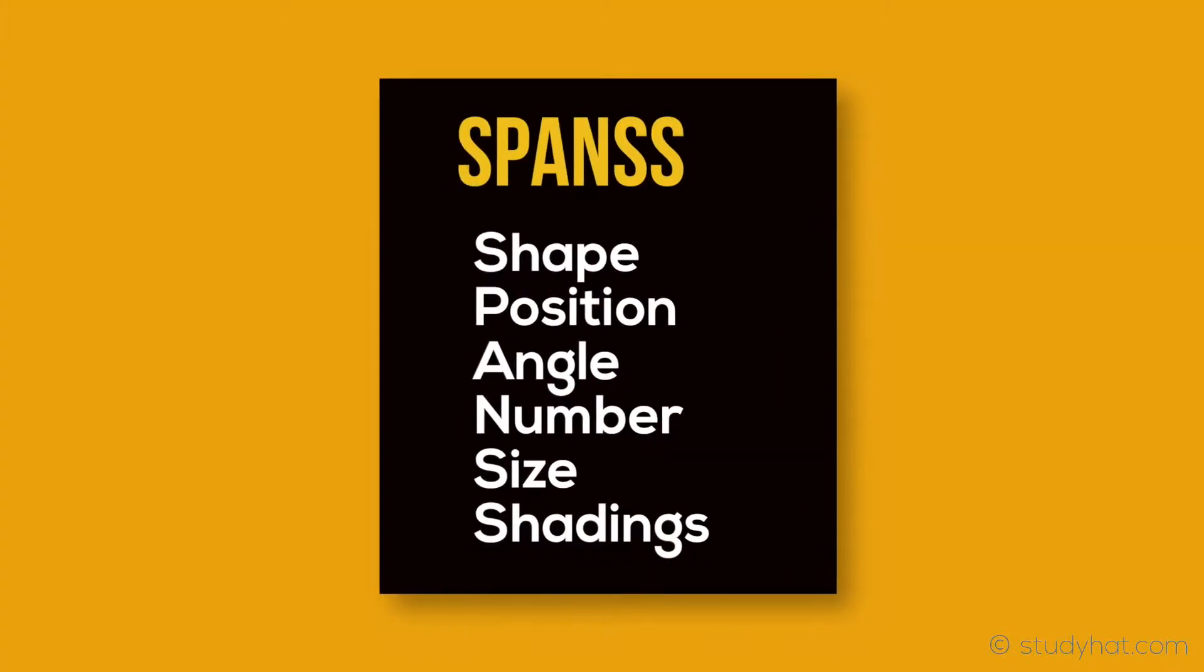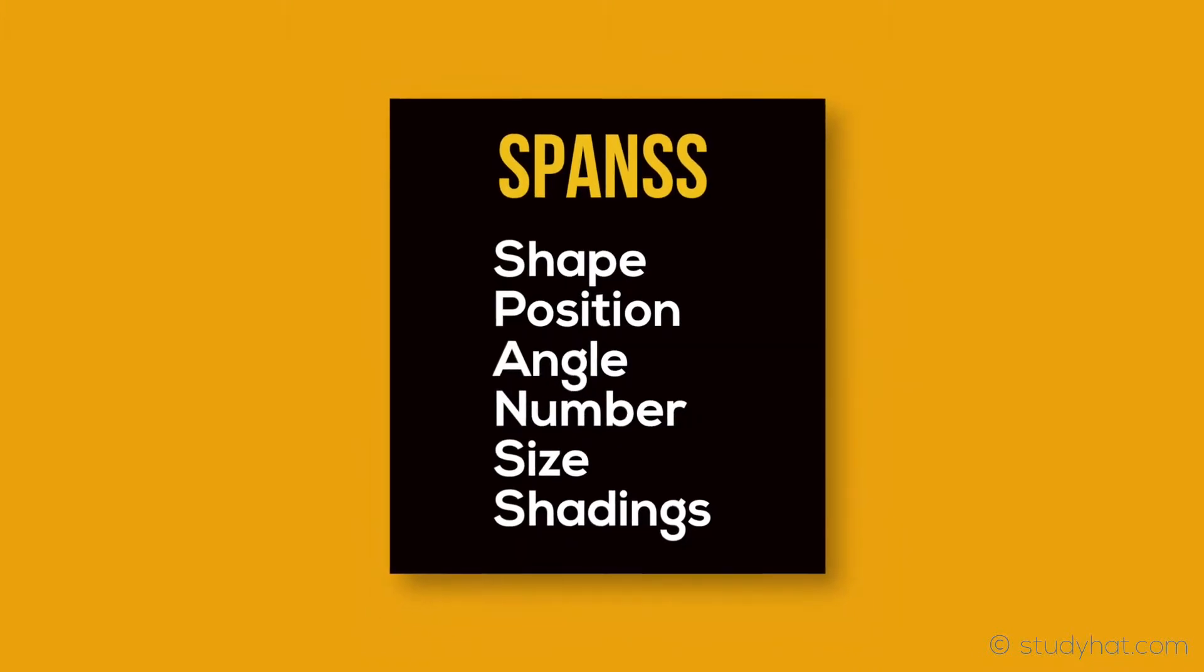Applying SPANSS will also come in handy when spotting the odd one out, so I'd highly recommend remembering to apply it as it gives you a list of differences to look out for when answering the question. SPANSS stands for shape, position, angle, number, size and shading, and the best way to use SPANSS is by working your way down each letter and look to see if you can spot that in each question.